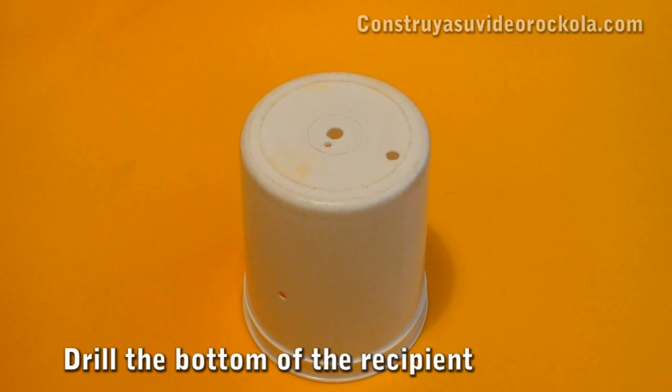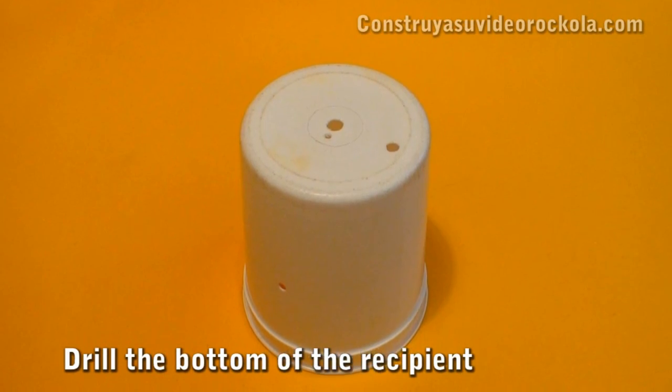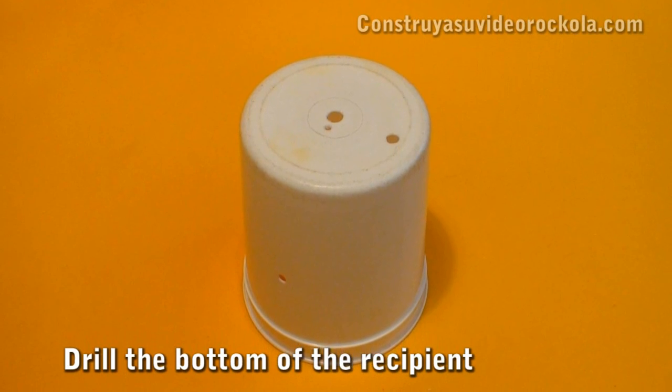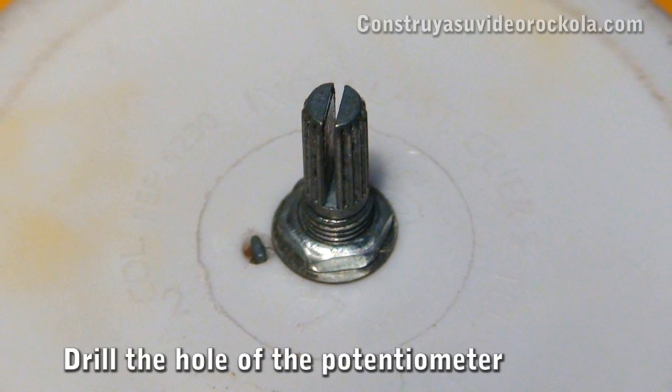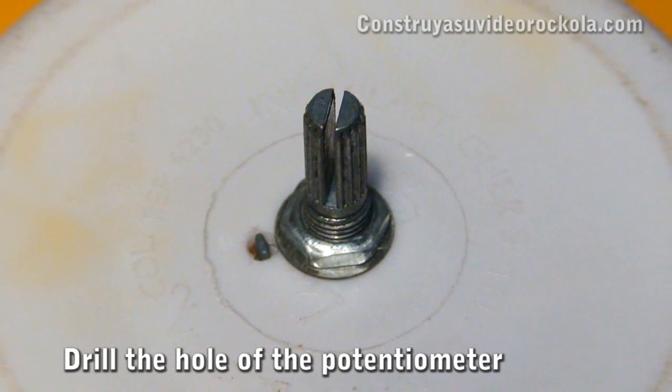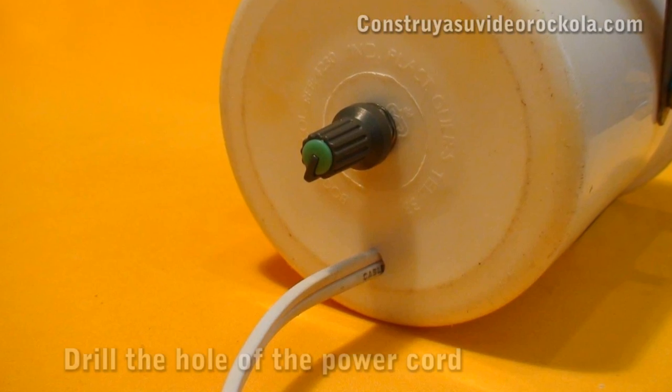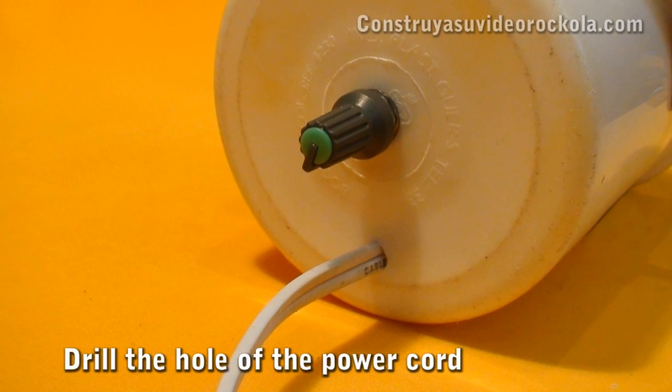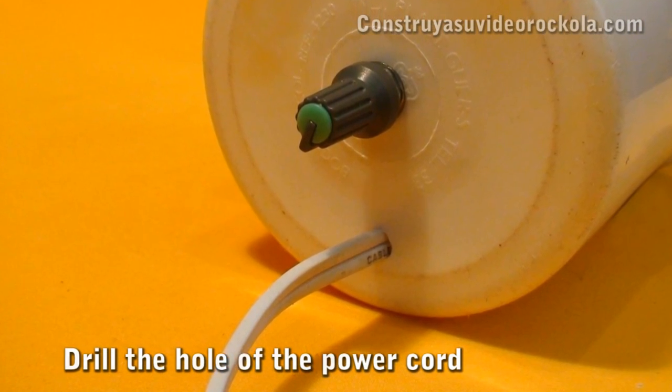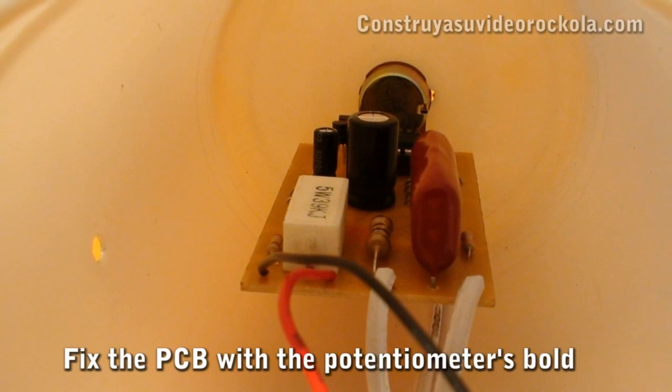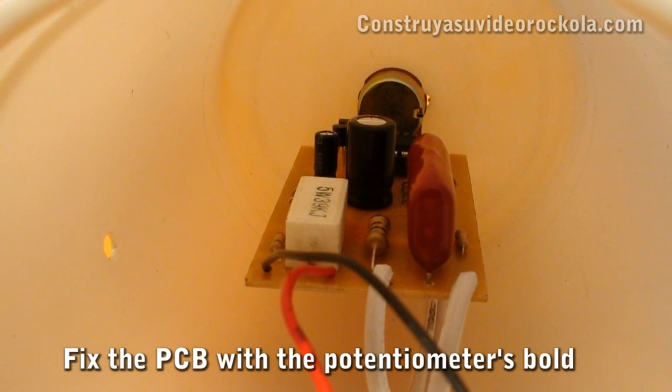Now comes the installation of the oscillator circuit in the bowl of ice cream. Three holes must be made in the back: one for the knuckle of the potentiometer shaft, another to fit the pin of the pot, and at the bottom another hole where the power cord exits the circuit.